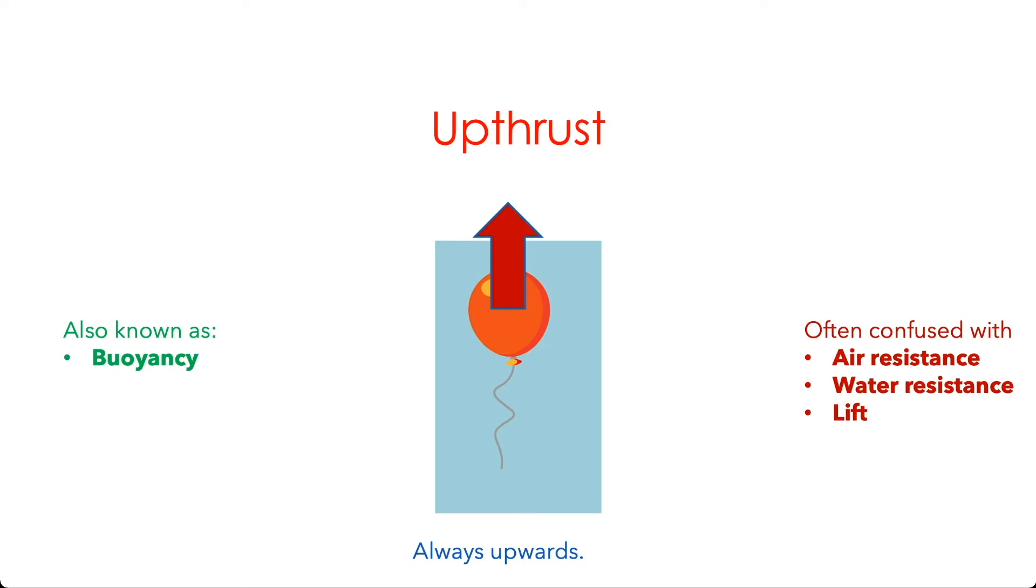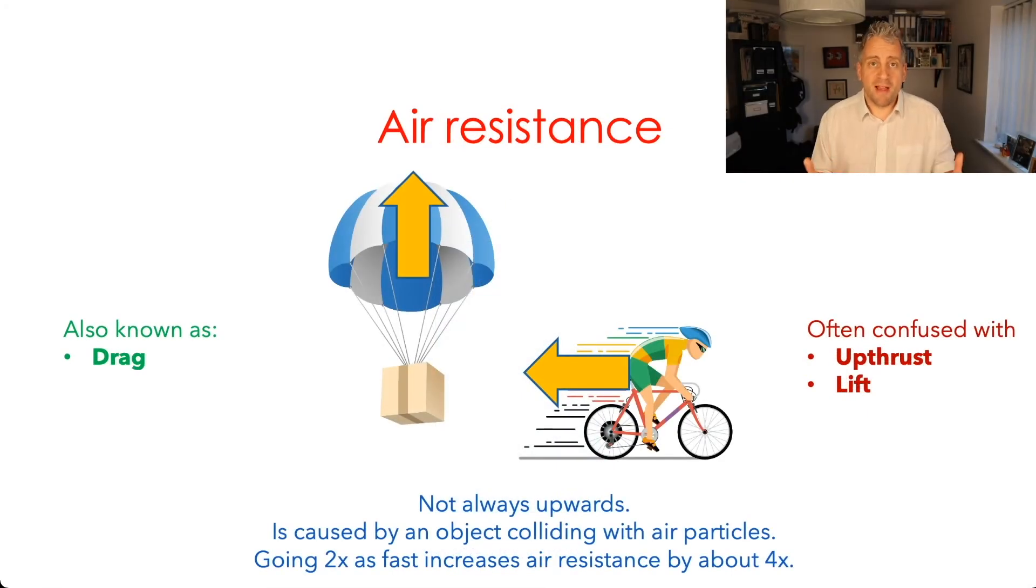Okay so let's have a look at air resistance. So air resistance also known as drag and related to the idea of water resistance as well but is when an object is moving in comparison to the air that's around it. So that parachute that's falling is falling faster than the air around it so it's bashing into those particles in the air. That cyclist she's cycling faster than the air that she's going towards so she feels an air resistance pushing her backwards. So it's not always upwards.